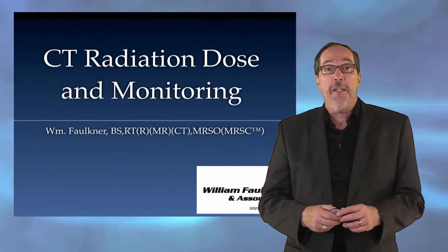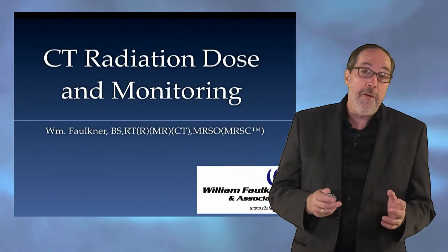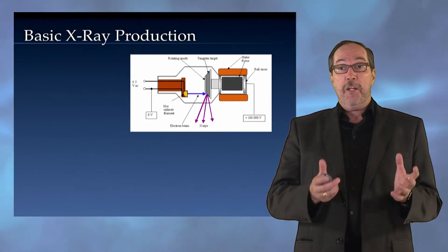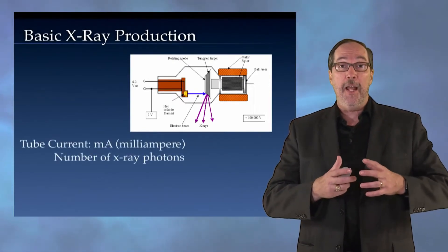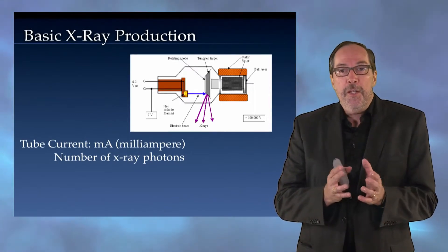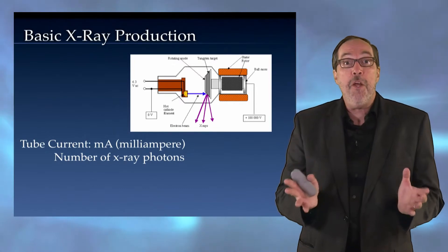Now, to get started with this, I want to review some principles of basic X-ray production. Recall that from an X-ray tube, we have a parameter that relates to the tube current, which is in milliamperes. This is the number of X-ray photons.